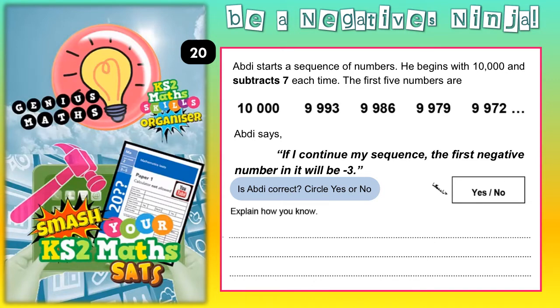Abdi says if I continue my sequence, the first negative number in it will be minus 3. Is he correct? Yes or no? Now the problem we've got here is we can't just keep going down in 7 each time. We'll be here till next Christmas. So we've got to have a quicker way of doing it.